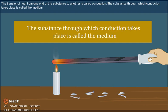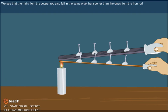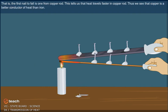The substance through which conduction takes place is called the medium. Let us use two similar rods, one of iron and one of copper with nails attached to both the rods at equal distances using blobs of wax. Hold both the rods over a candle flame. We see that the nails from the copper rod also fall in the same order but sooner than the ones from the iron rod. That is, the first nail to fall is one from copper rod. This tells us that heat travels faster in copper rod. Thus, we see that copper is a better conductor of heat than iron.